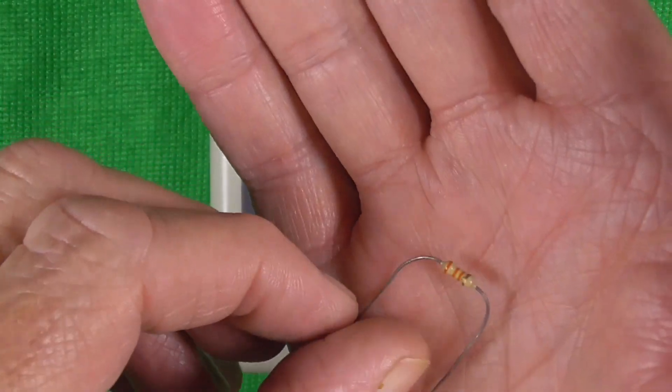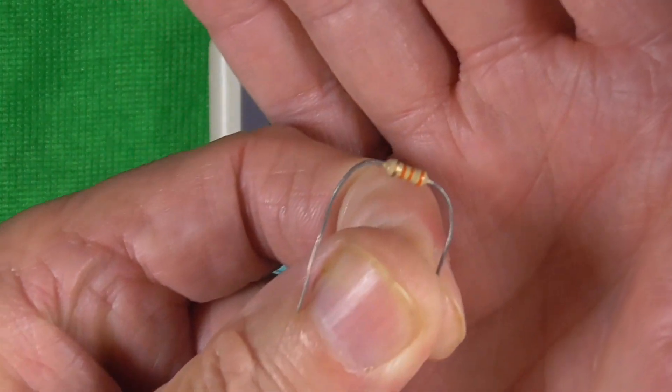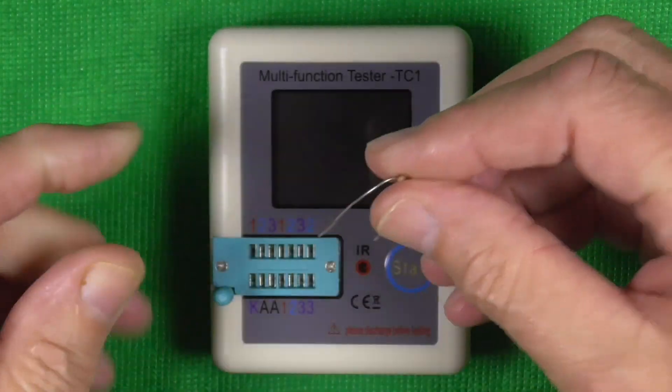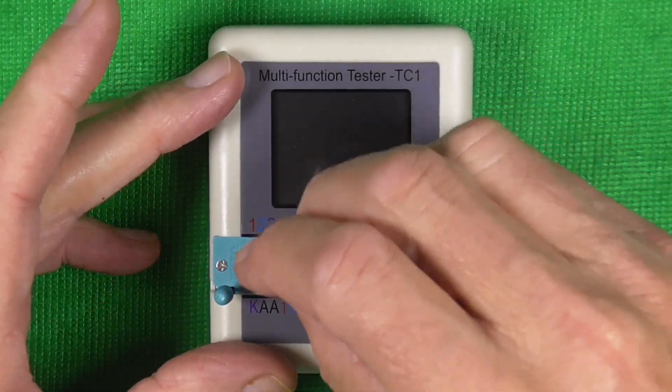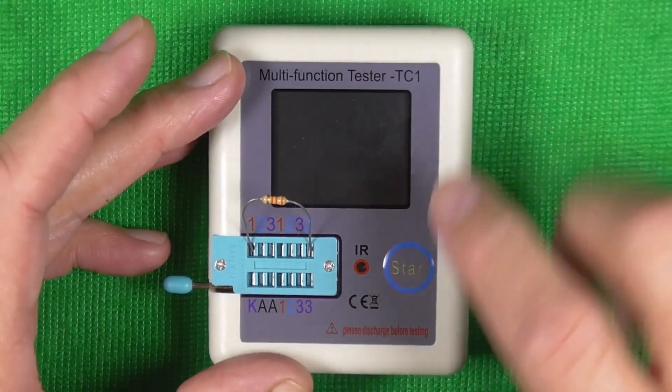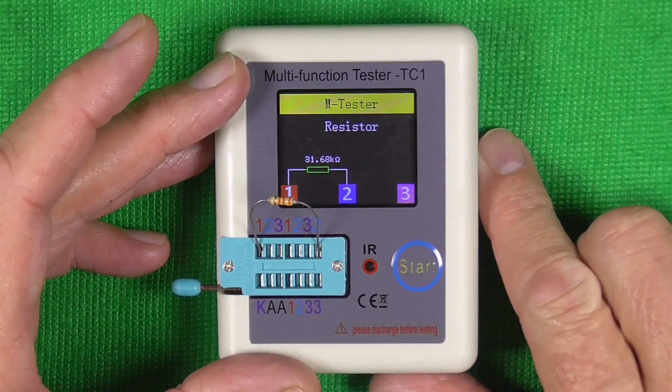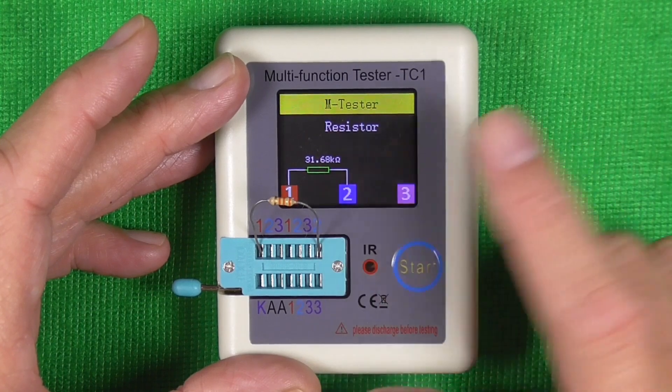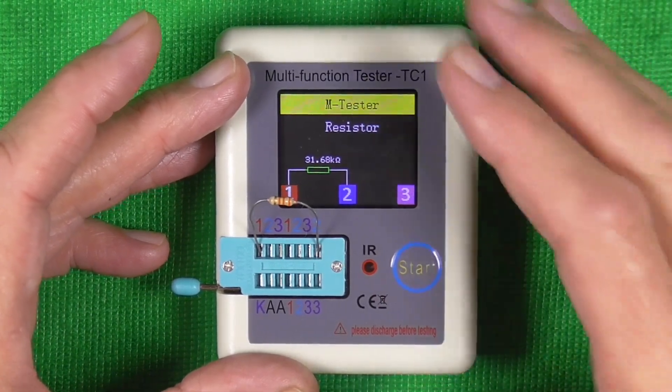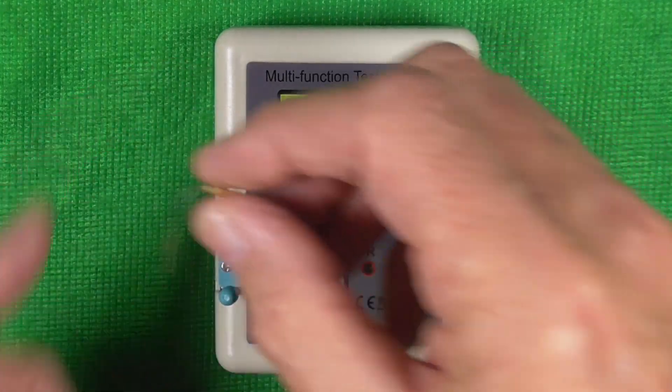Now I've got a couple of resistors here to test. This one should be 33K. So pop it in like that, press start. 31.68K ohms. That's that one.